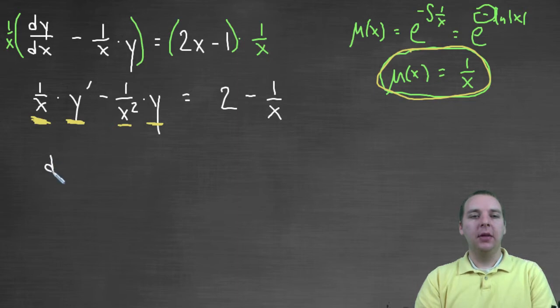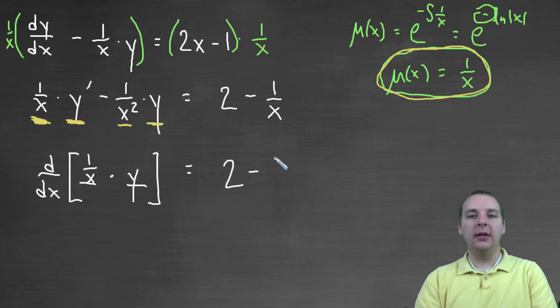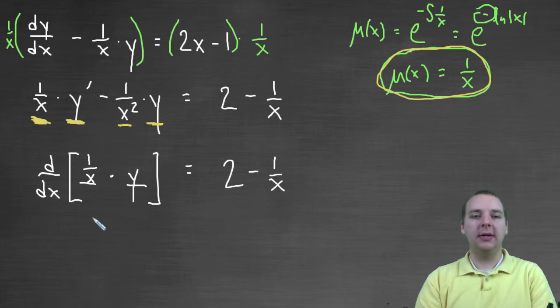So anyways, the left hand side will be the derivative of what product, like what's the product whose product rule would yield this. One of the terms is obviously y, because you have y in one expression, and y prime in the other. The other expression is one over x, because you have one over x, and then you have the derivative of one over x, it's negative one over x squared. Still equal to two minus one over x, there's really nothing to do on the right hand side, I just simply rewrote the left hand side.